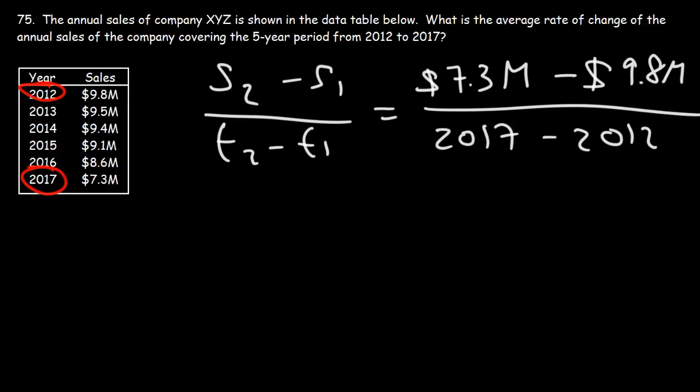So 7.3 minus 9.8, that's going to be negative 2.5. So over the five-year period, the annual sales dropped by 2.5 million. 17 minus 12 is 5. Now what is 2.5 divided by 5? We know that 25 divided by 5 is 5. So 2.5 divided by 5 is 0.5. If you break down 2.5 into 5 equal parts, you're going to get 0.5.